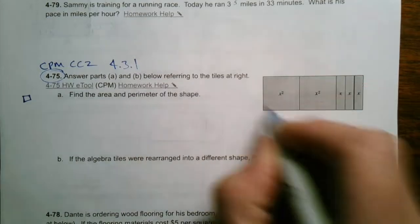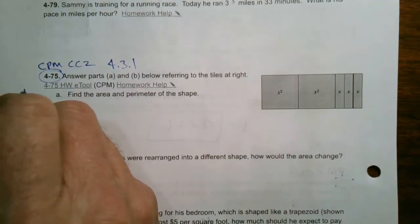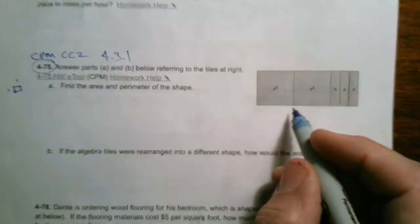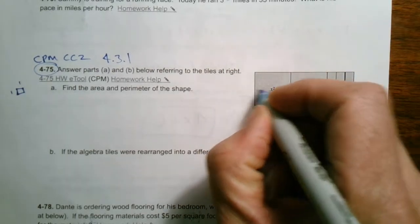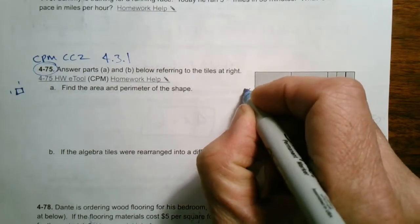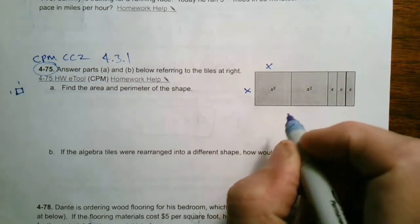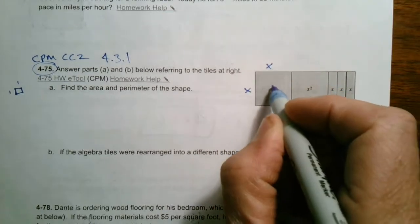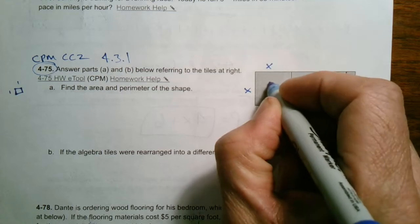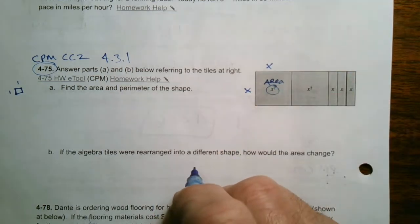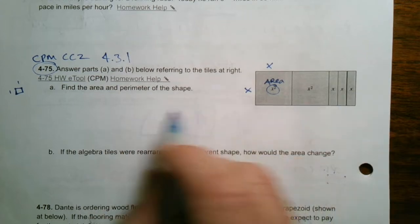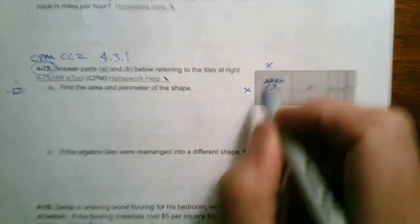We don't have any unit tiles in this picture, but your unit tiles are always one by one. So what are the x-squared tiles? They're x-squared tiles because their area is x-squared, and their dimensions are x by x. So x times x is x-squared. That's why their area is the name of the tile, the x-squared. And then we know our dimensions are x by x.